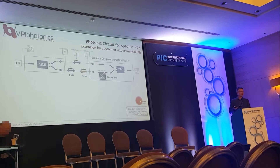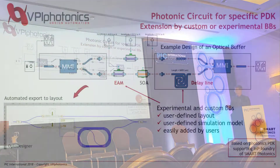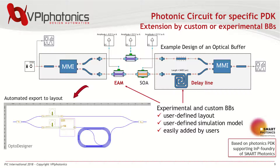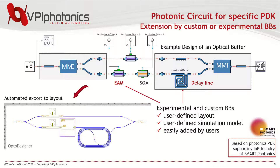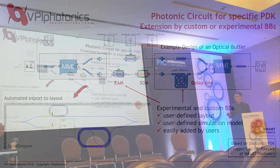What if you have additional building blocks you want to add to the PDK library? We have an example of an optical buffer with a delay line corresponding to 9.4 millimeters, equivalent to 1 to 4 bits of delay for a certain modulation format. There is a user-defined layout and possibly a user-defined simulation model for this experimental EAM, which can be added directly to the PDK by the user — either using specific information from the foundry or for dedicated custom designs — and then using automatic export to the layout.